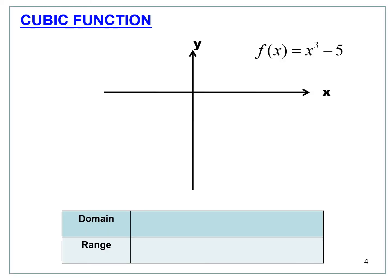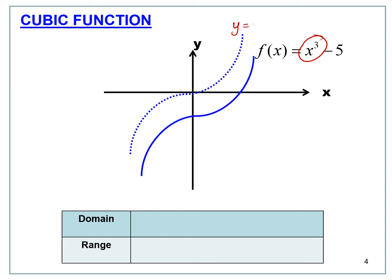For f(x) = x³ - 5, look at the x³ part — this is the basic graph. The minus 5 means this graph is shifted 5 units below the x-axis. So this is the original graph shifted 5 units down to negative 5. Both domain and range are negative infinity to infinity, as x and y are defined for the whole graph.